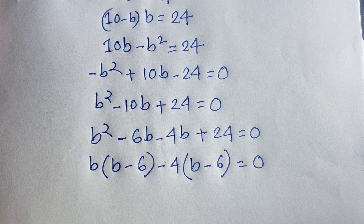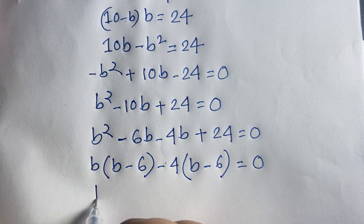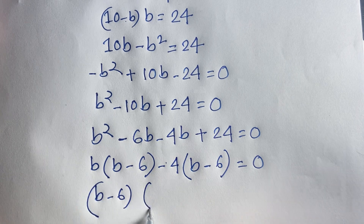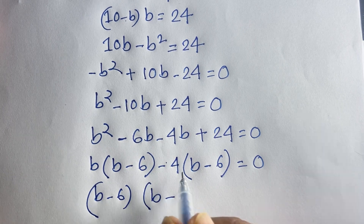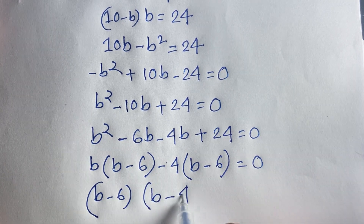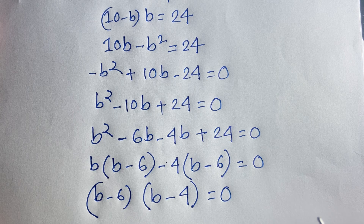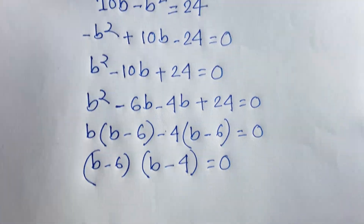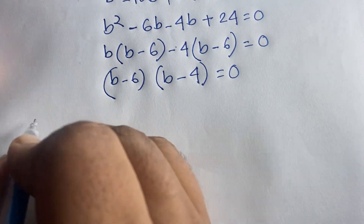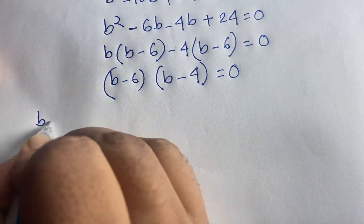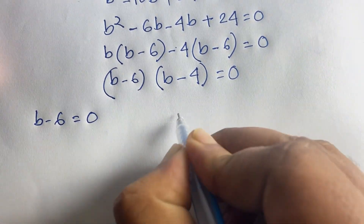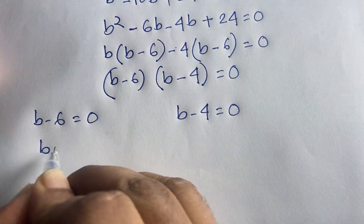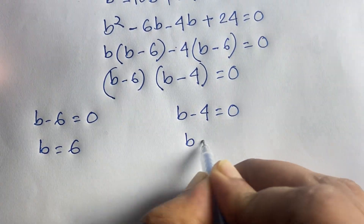So we get (b minus 6)(b minus 4) is equal to 0. From the first case, b minus 6 is equal to 0, so b is equal to 6. From the second case, b minus 4 is equal to 0, so b is equal to 4.